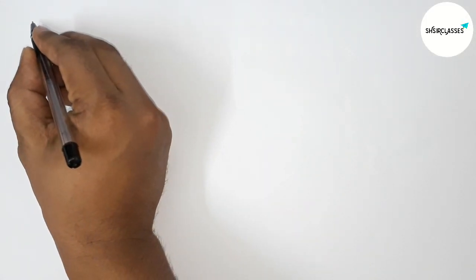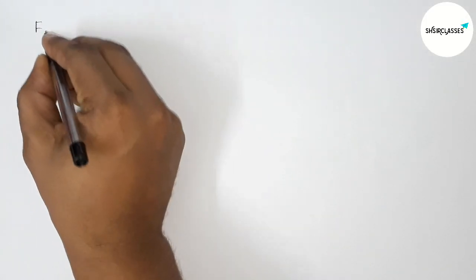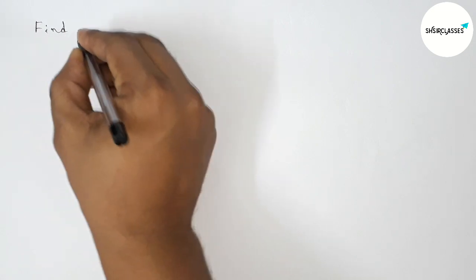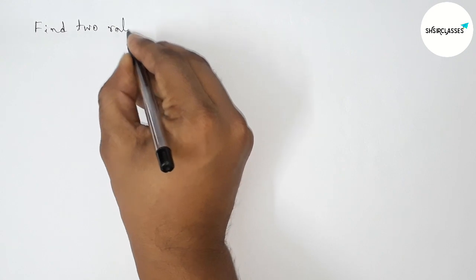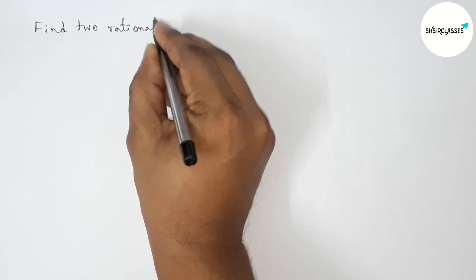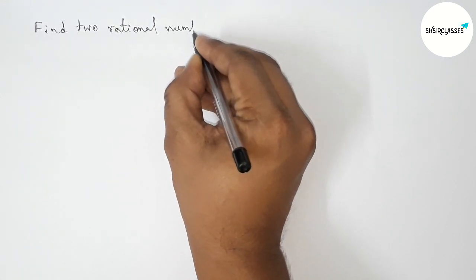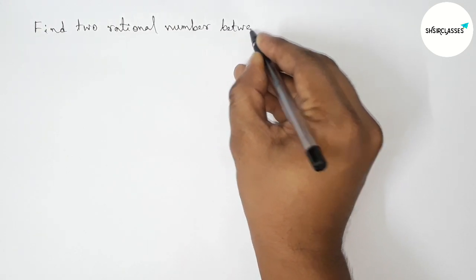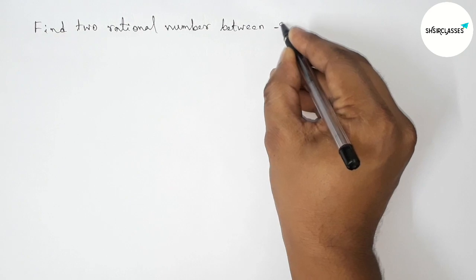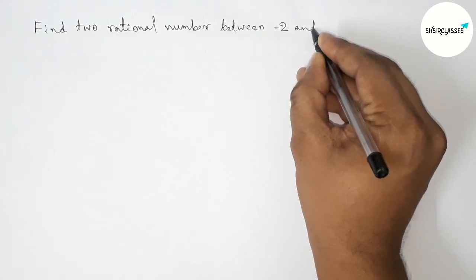Hi everyone, welcome to SI Share Classes. Today in this video, we have to find two rational numbers between minus two and two in an easy way. Please watch the video till the end. Let's start the video.